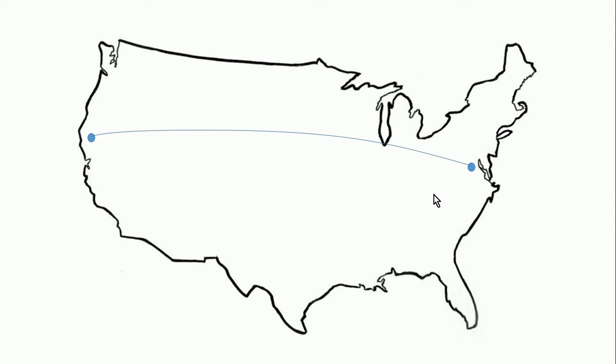If that communication line were severed, we wouldn't have communication between those two points. So the Defense Department — specifically an organization called the Defense Advanced Research Projects Agency, or DARPA — was tasked with finding a way to make a more reliable computer network beyond simple point-to-point connections. Their solution: instead of two computers talking directly to each other, what if a software application could mediate communication, routing it through another computer? Almost like delivering a message through a third person in a classroom.